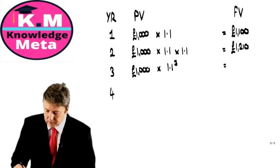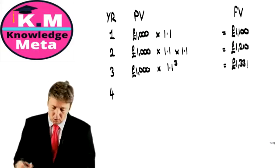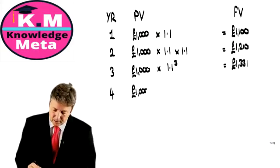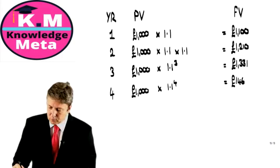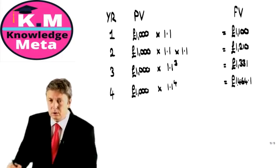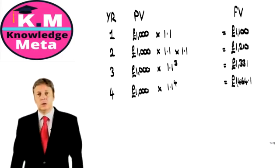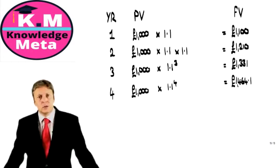And we get something like 1,331. Or, year 4, we have our £1,000 multiplied by 1.1 to the power 4. 1,464.1. Well, that's it. That's how compound interest works. And what we want to do is to reflect this in a simple formula.